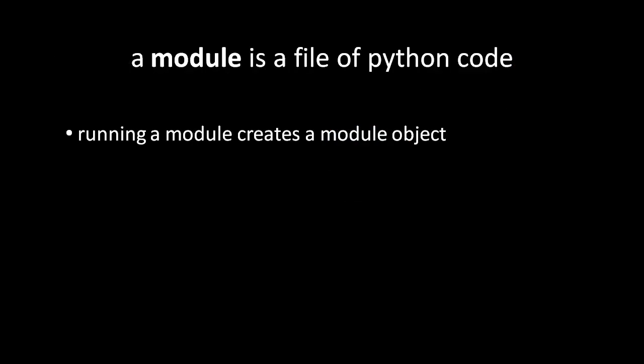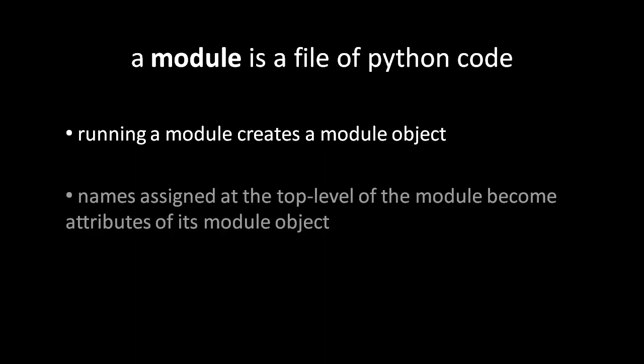Each file of Python source code is called a module. For every module which is run, the Python interpreter creates an object to represent that module. And as that module executes line by line, any names that get assigned at the top level of the module, that is any assignment which is not inside a def statement or class statement in that module, those assigned names get added as attributes to the module object.